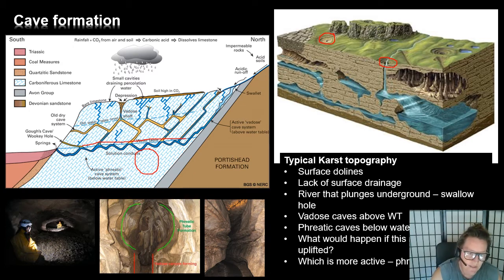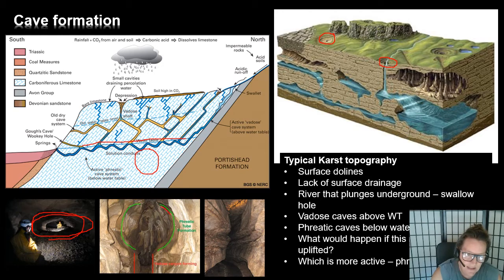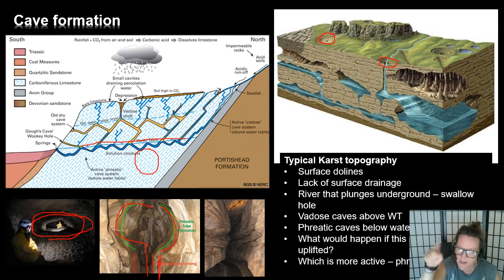Down at the bottom you can see nice passage shapes. A phreatic shape shows the cave was formed underground. A vadose shape shows it was initially phreatic but since coming out of the water table, it has this vadose drawdown effect forming a keyhole shape at the bottom. You get these in a lot of caves.